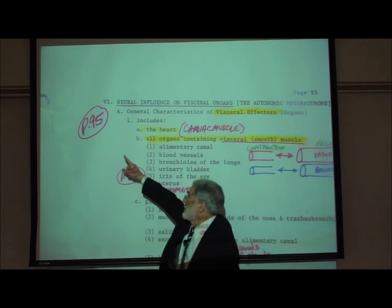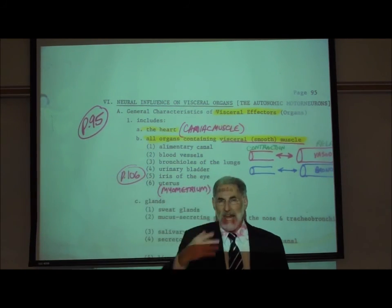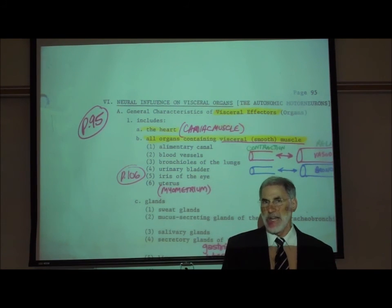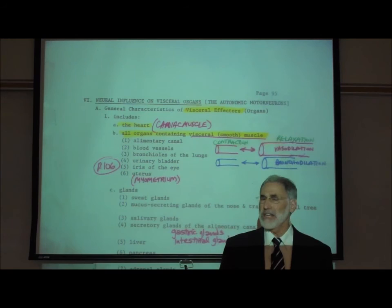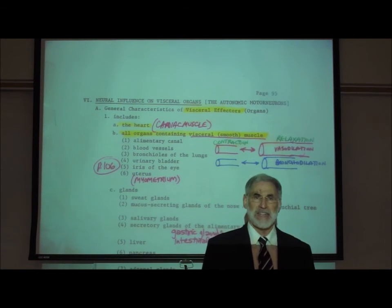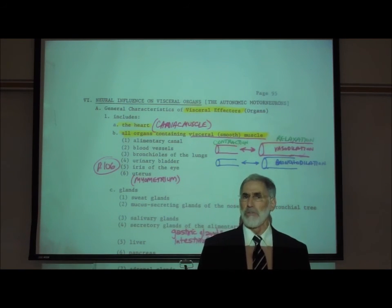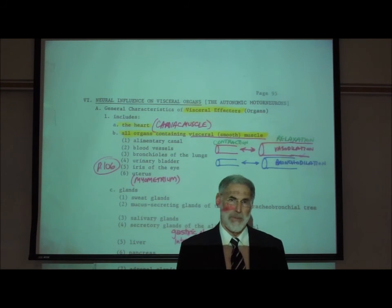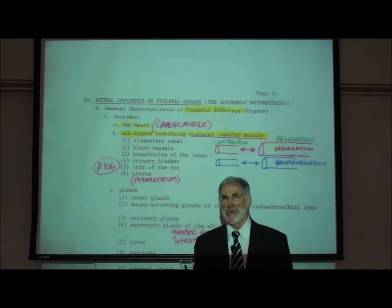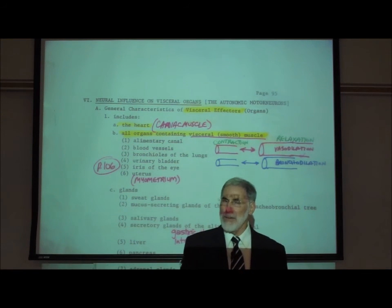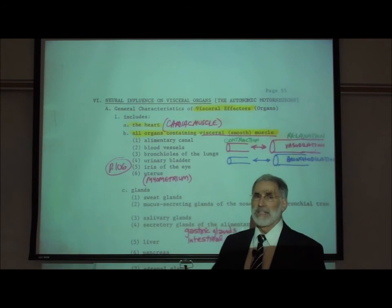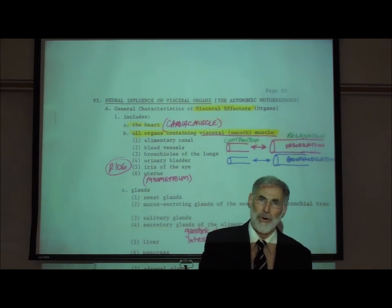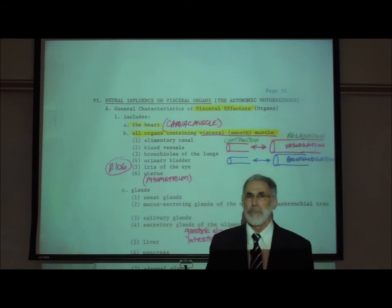We are now on page 95 and we want to examine the role of the autonomic motor neurons innervating our internal organs or visceral effectors. Autonomic motor neurons influence the rate of activity of our internal organs or visceral effectors of the body. The autonomic motor neurons essentially innervate cardiac muscle, visceral smooth muscle, and the glands of the body.